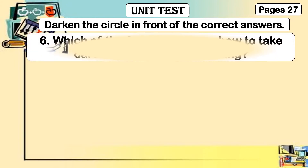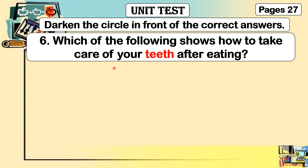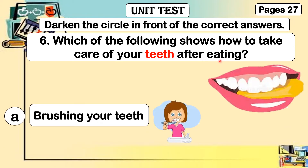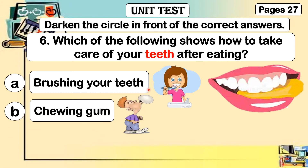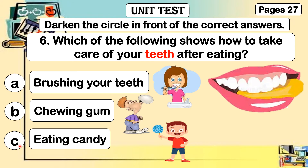Number six: which of the following shows how to take care of your teeth after eating? Letter A: brushing your teeth. Letter B: chewing gum. Letter C: eating candy. What will you do after eating when you are finished? Letter A: brush your teeth. Letter B: chew a gum. Letter C: eat candy.